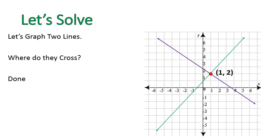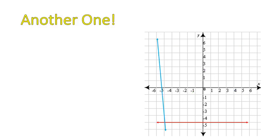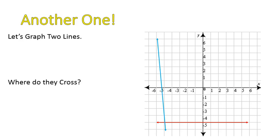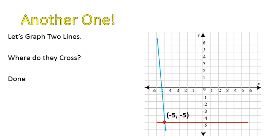When we're given a graph, this is the easiest type of question with solving systems of linear equations. Let's take a look at this one. Here are two lines — where do they cross? Right there at the point negative 5, negative 5.